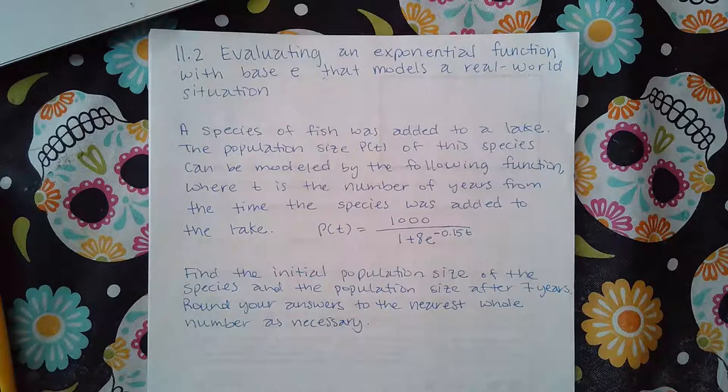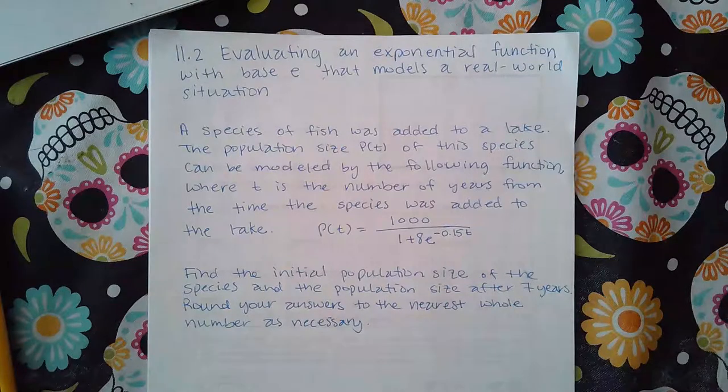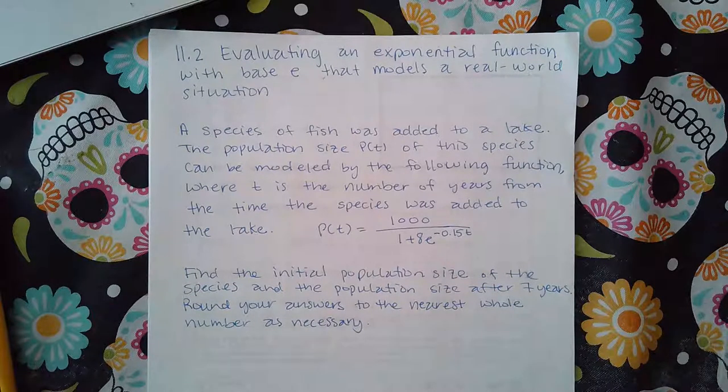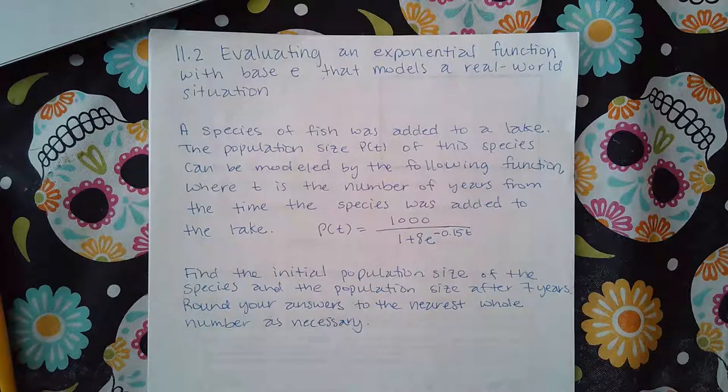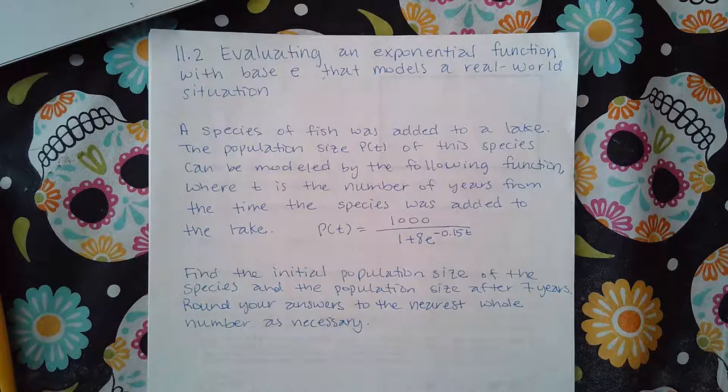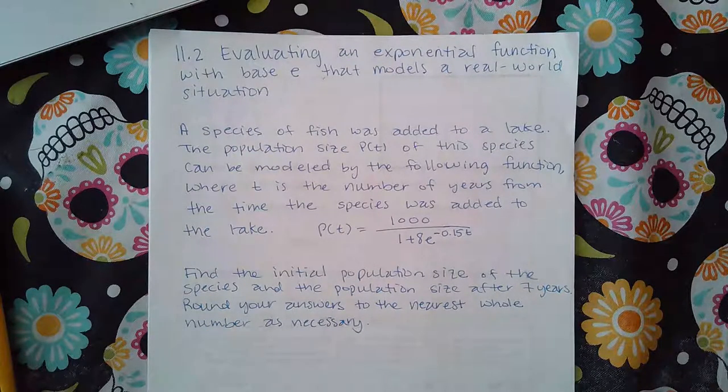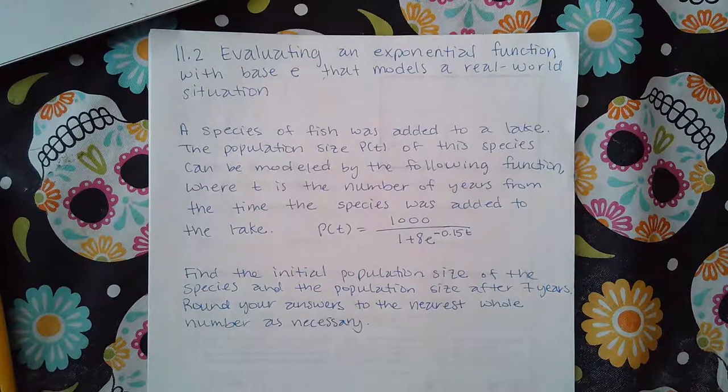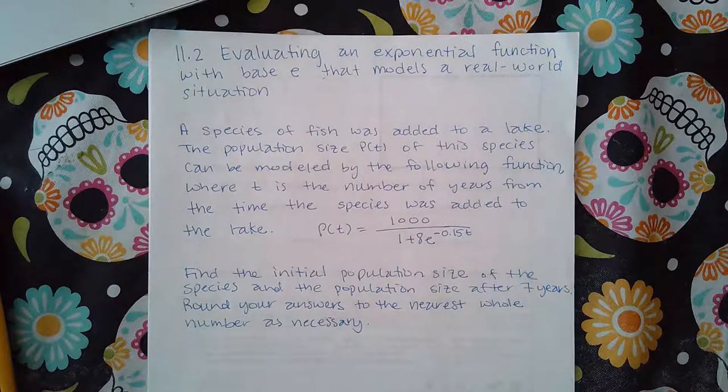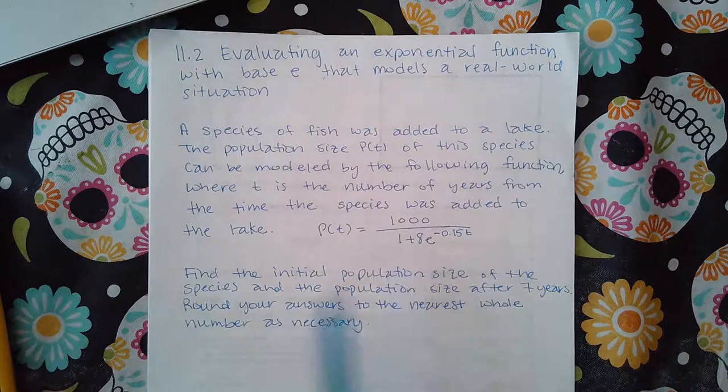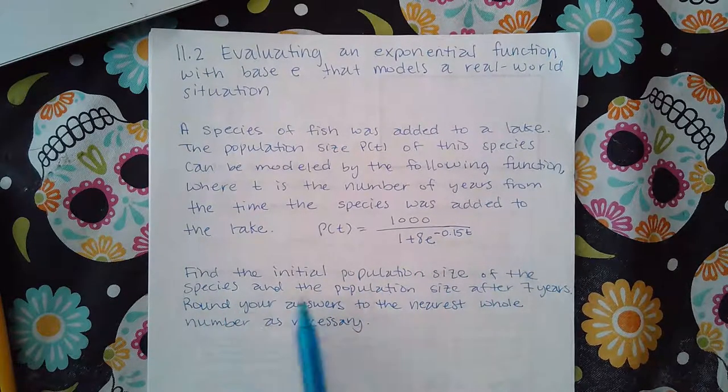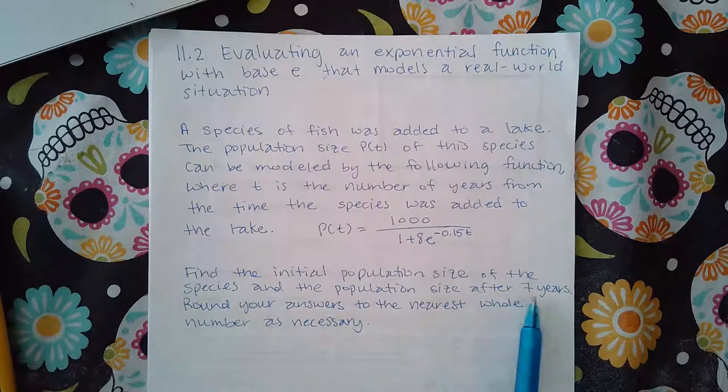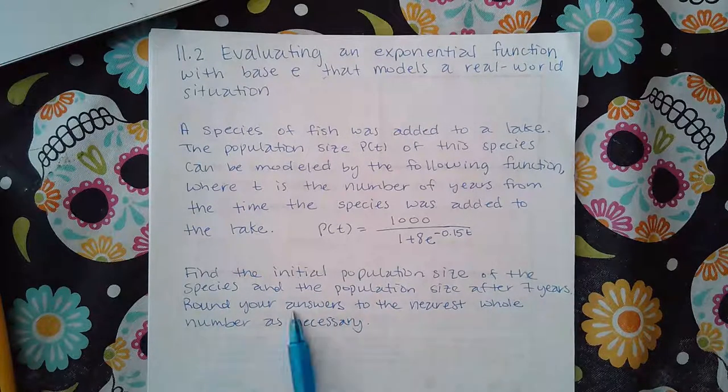It says a species of fish was added to a lake. The population size P(t) of the species can be modeled by the following function, where t is the number of years from the time the species was added to the lake. Find the initial population size of the species and the population size after seven years. Round your answer to the nearest whole number as necessary.